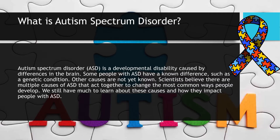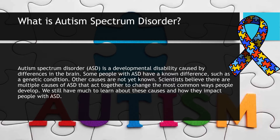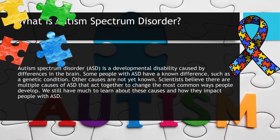Autism Spectrum Disorder, ASD, is a developmental disability caused by differences in the brain. Some people with ASD have a known difference, such as a genetic condition. Other causes are not yet known. Scientists believe there are multiple causes of ASD that act together to change the most common ways people develop. We still have much to learn about these causes and how they impact people with ASD.